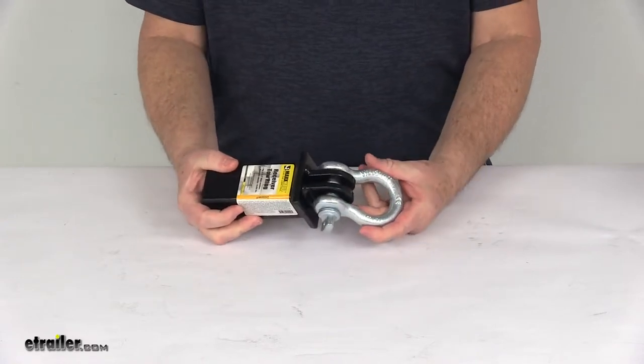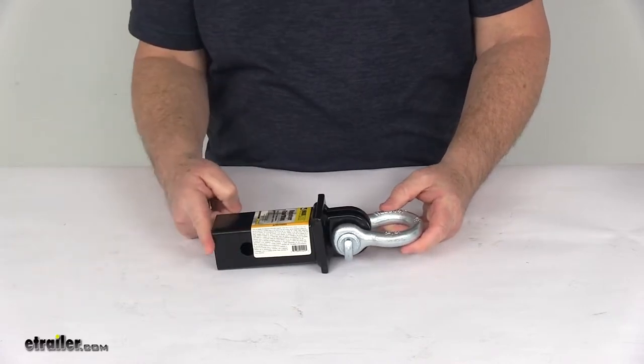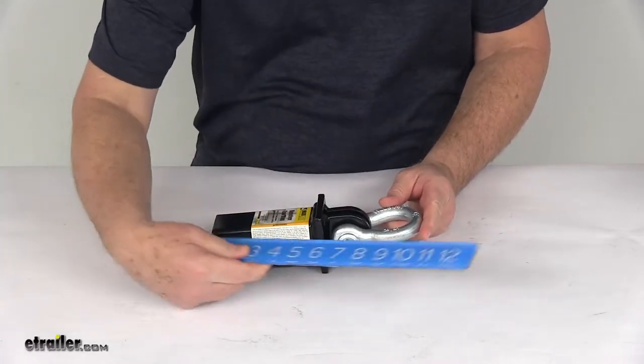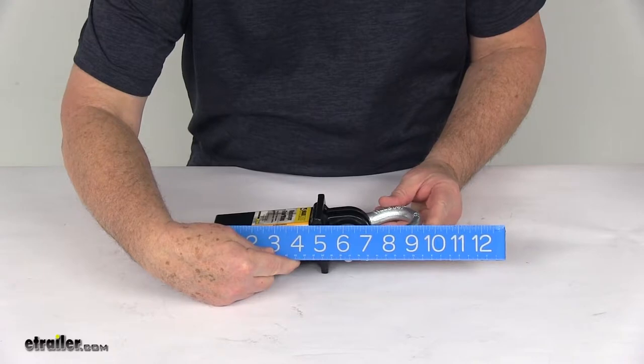Weight capacity is 10,000 pounds. I'll give you a few measurements on this. The overall length from the back to the very end of the loop is going to be right at about 10 inches.